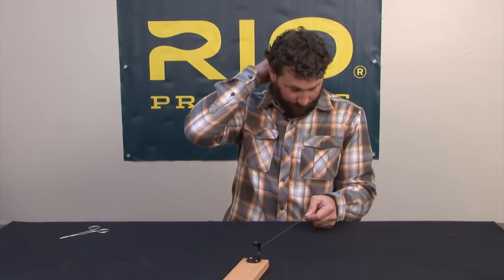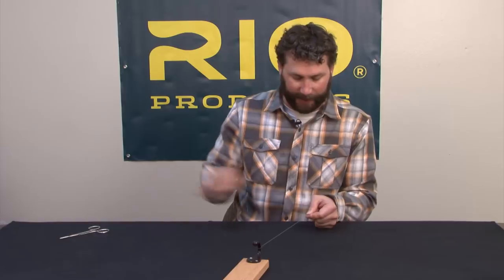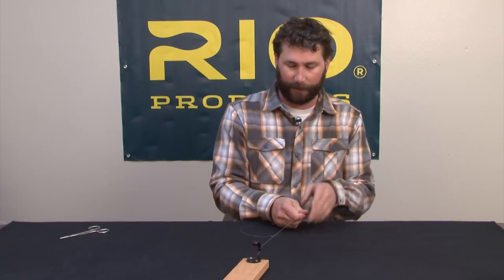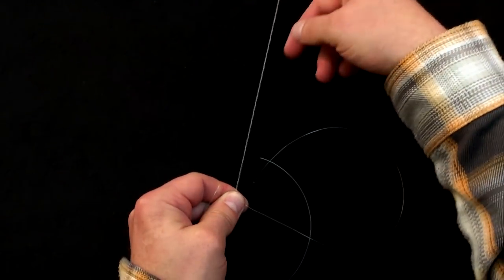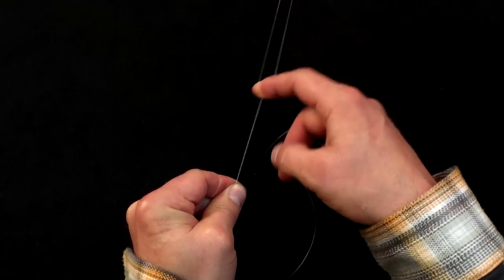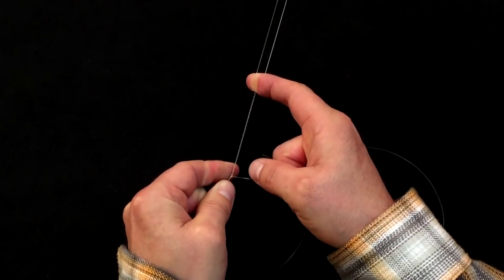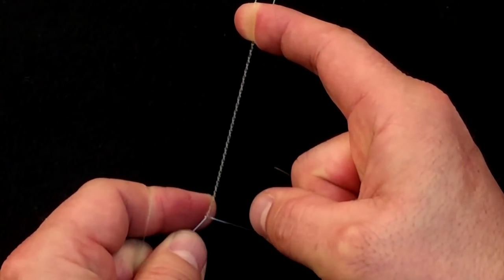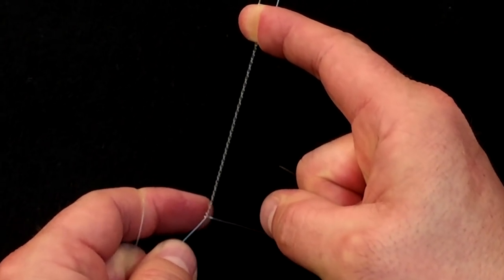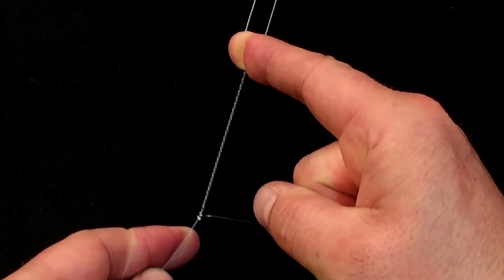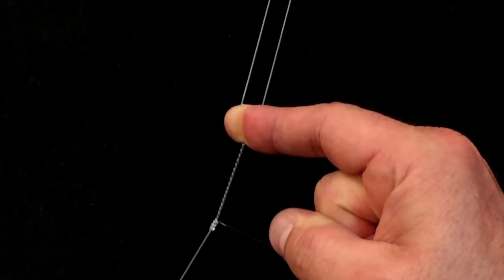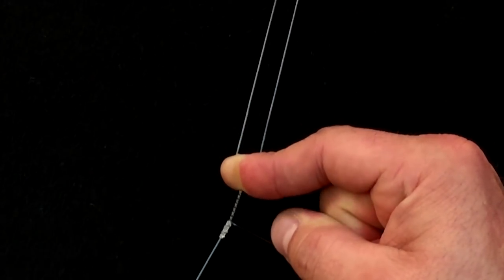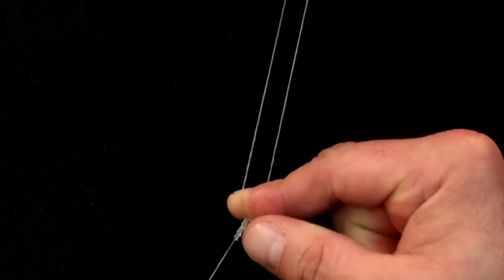I'm going to pinch down between my thumb and forefinger between the tag end and the leader end here. I'm going to go in at the top of the loop and compress the twists. The twists are going to want to back on themselves and that's a good thing because I'm going to start to feed the tag end down and it's going to wind back on itself forming the Bimini Twist. I'm going to run that all the way down to the end.